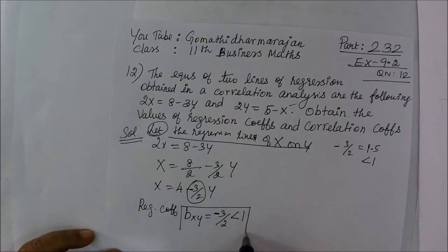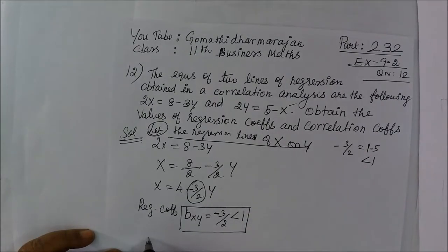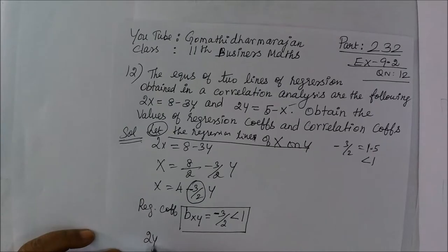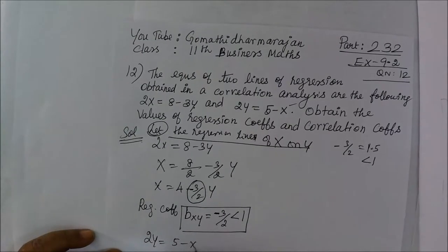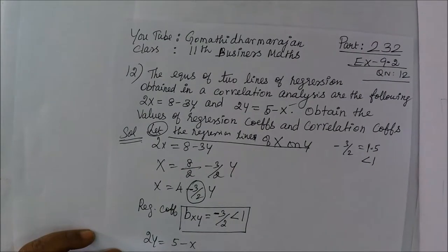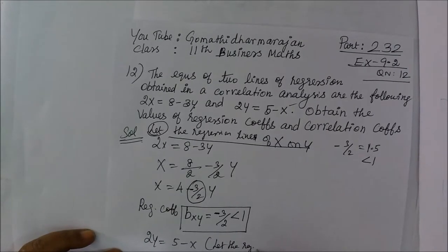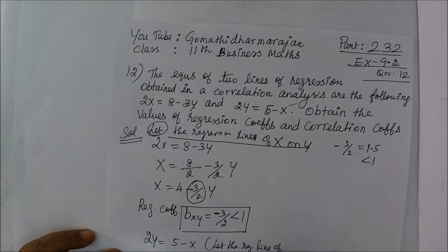So now bxy. Next line is 2y equal to 5 minus x. So y is equal to 5 by 2 minus x by 2. So let the regression line of y on x.